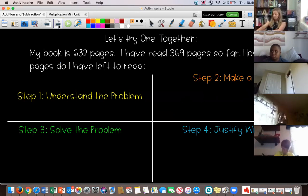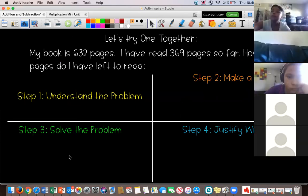All right. So, now, we're going to look at one together, and we're going to talk through the steps. All right. Together on one thing. So, step one is understand the problem. Ms. Fleischer, can you pick a volunteer to read the problem for us? Just read the word problem at the top of the page. Alejandro. Go ahead, Alejandro. Make sure you unmute yourself. Let's try one together. My book is 632 pages. I have read 369 pages so far. How many pages do I have left to read? Okay.